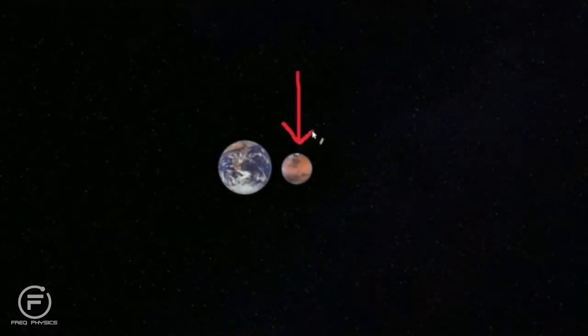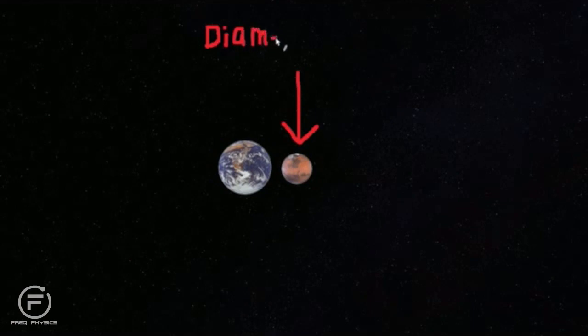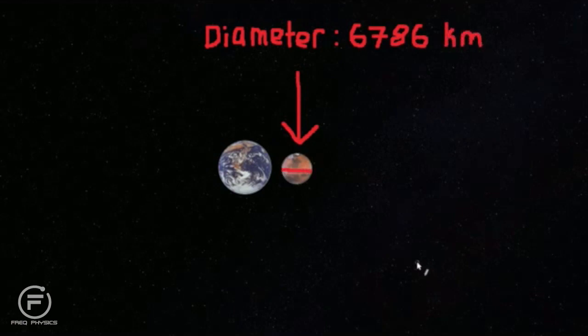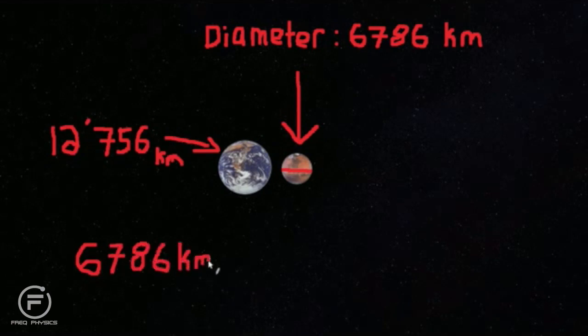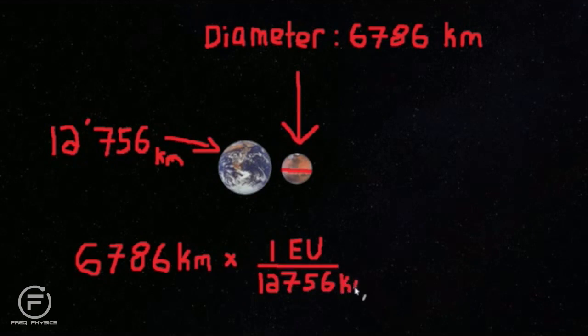Now we can begin talking about the distance to the Moon. Using Earth units, we can convert the diameter of all the planets and Pluto into Earth units. For example, Mars has a diameter of 6,786 kilometers. Therefore, doing some division, we find that Mars is 0.532 Earth units. Thus, Mars is about one half the size of Earth.